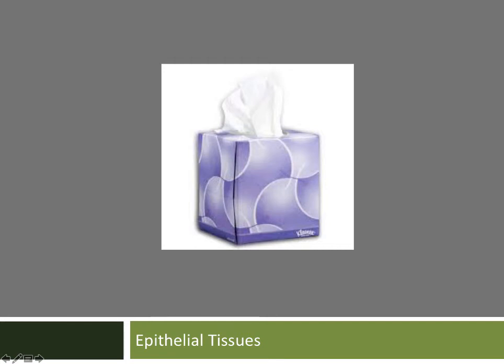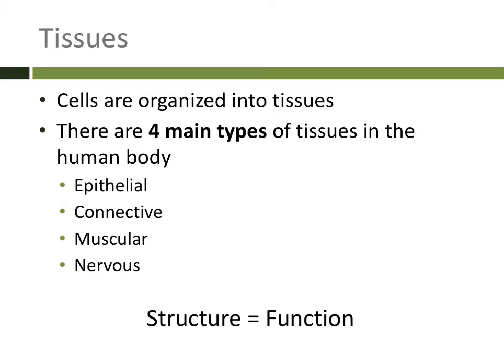Hi, everybody. Today we're going to be discussing epithelial tissues. Remember, there are four main types of tissue in the human body: epithelial tissues, connective tissue, muscular tissue, and nervous tissue.